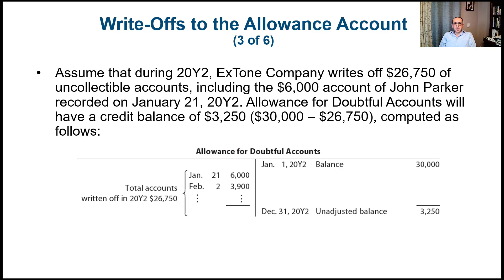Assume that during year two, X-Tone Company writes off $26,750 of uncollectible accounts, including the $6,000 account of John Parker recorded on January 21st. The allowance for doubtful accounts would have a credit balance of $3,250. We estimated $30,000 and actual write-offs were $26,750, so the ending balance is a credit of $3,250, as shown on the T-account.